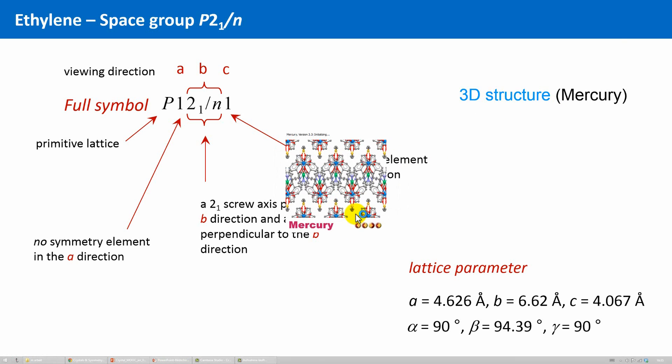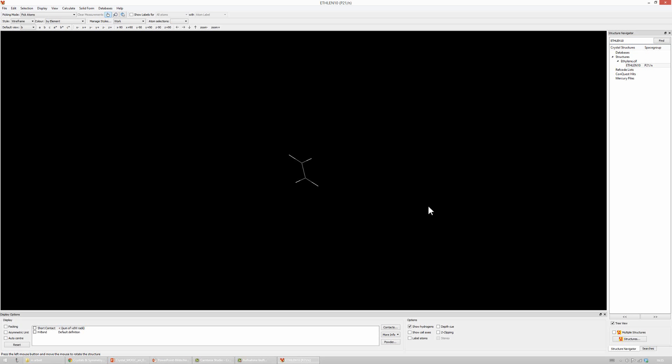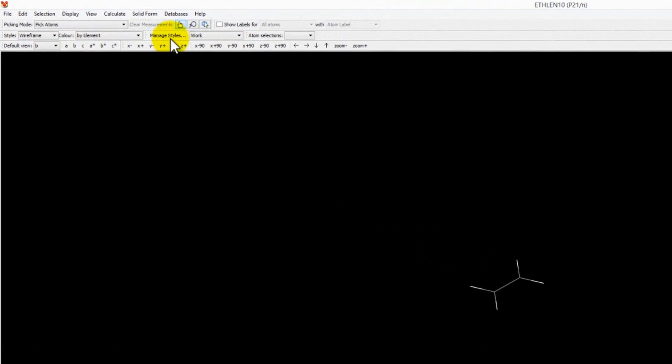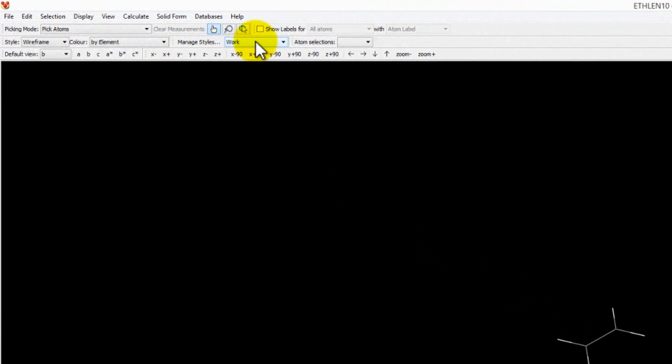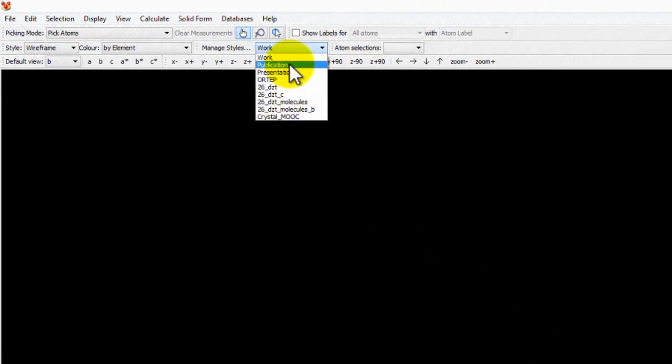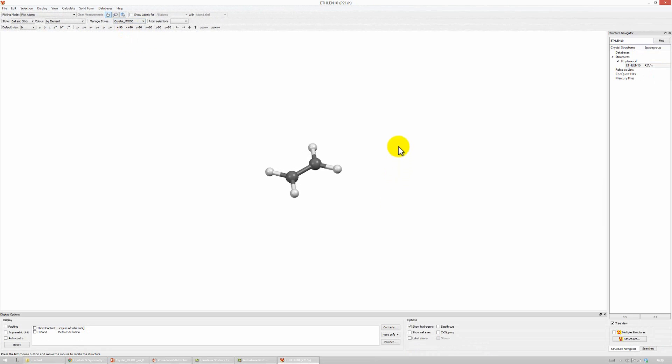If you start Mercury with a double click on the CIF file, you should see something like this. By default, Mercury displays not the whole crystal structure, but in most cases only one formula unit of the compound. Here, our ethylene molecule. We can change the display styles in many ways, and there are some shortcuts for display settings that are incorporated already in Mercury. For instance, we can change the display to the style Publication. And we can zoom in a bit by dragging while pressing the right mouse button.